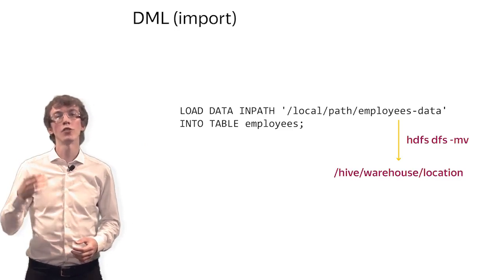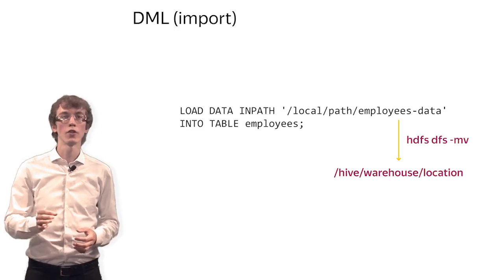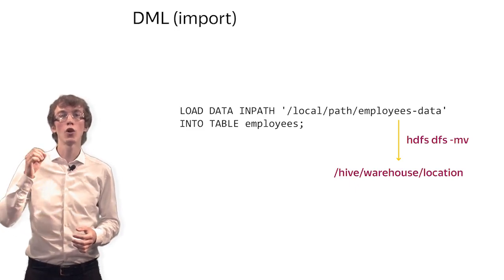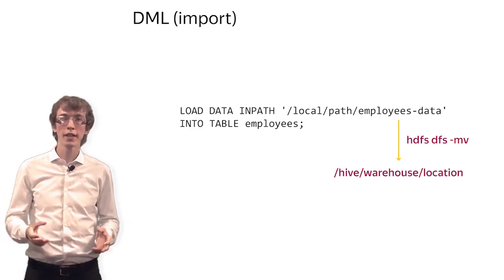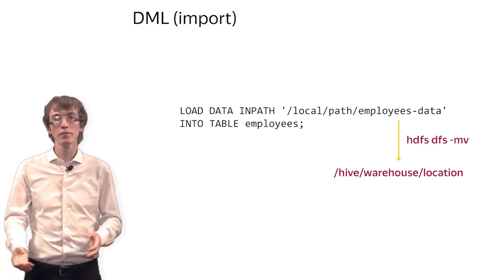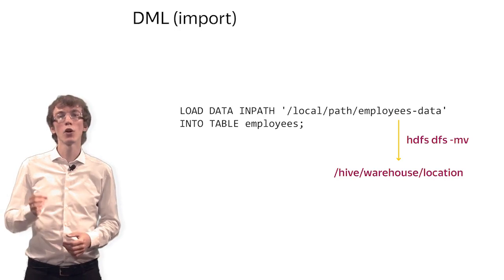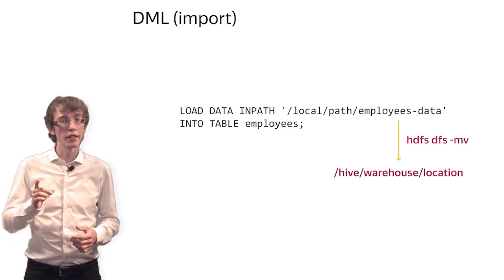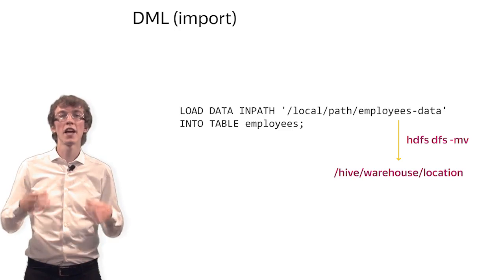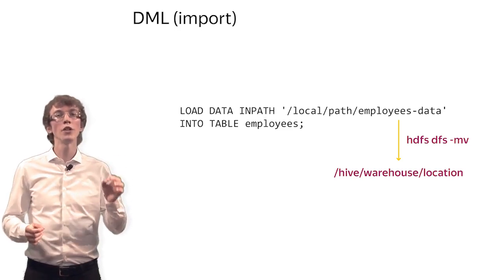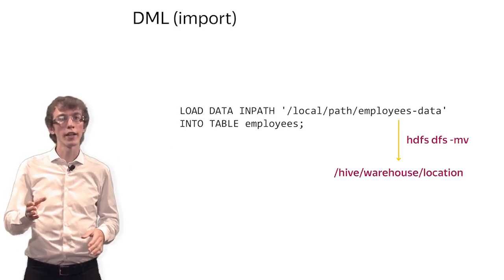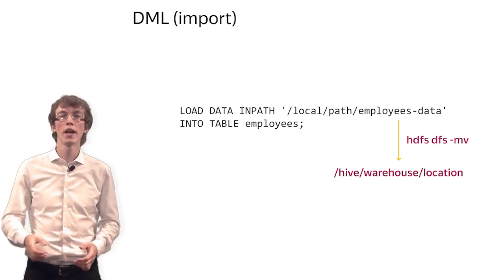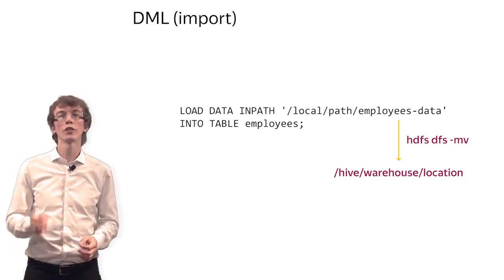Hive, unlike traditional relational databases, supports a schema-on-read strategy. If you have a schema-on-write database, then all the data you try to load will be automatically validated to fit the table schema. On the other hand, this statement holds true when you write into a Hive table with an SQL query. Hive in its core does not validate the data during the loading procedure, so it will throw an exception during data reading if your data is not aligned with the table schema. That is why it is called schema on read.